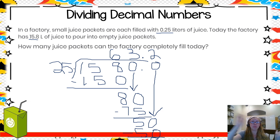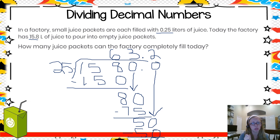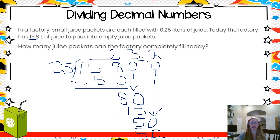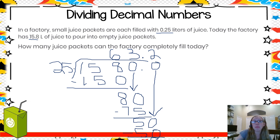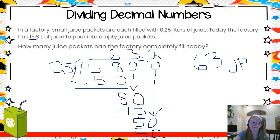I subtract and I'm left with zero — zero is my remainder, so I'm done. I see 63 and two tenths as my quotient. The question asked how many juice packets the factory can fill completely. My whole number is 63, meaning there are 63 full juice packets, and then two tenths of another that isn't full. So my answer is 63 juice packets can be filled completely.